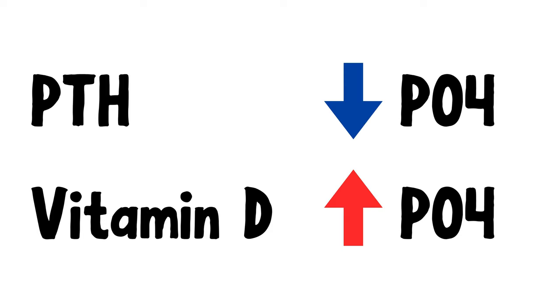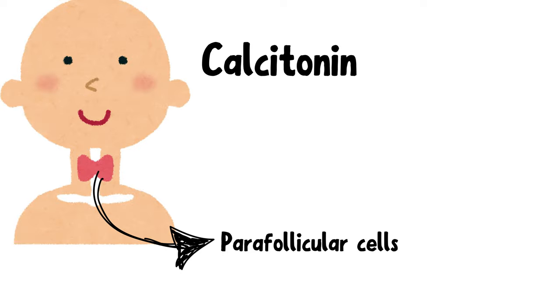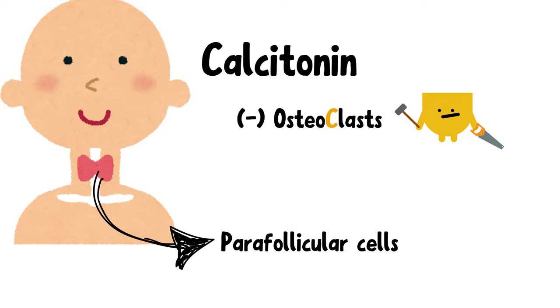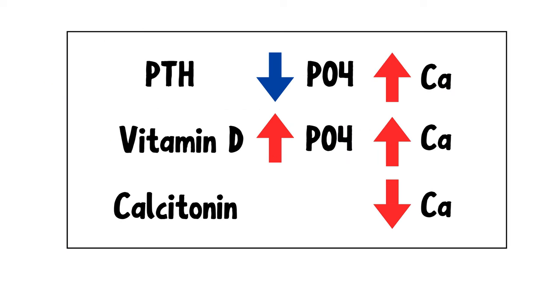Now let's look at calcitonin. Calcitonin opposes the actions of Vitamin D and parathyroid hormone. It is produced by the parafollicular cells, or C-cells, of the thyroid gland. Calcitonin inhibits the activity of osteoclasts at the level of the bone, preventing bone breakdown and the release of calcium into the bloodstream. This is how these three hormones regulate our body's calcium level.